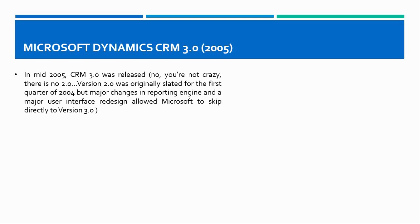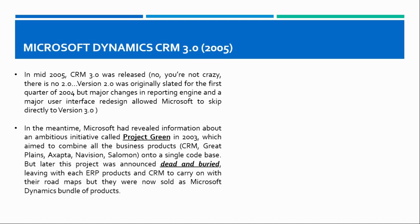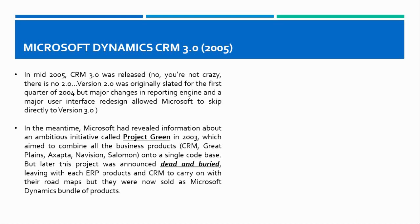In the meantime, Microsoft revealed information about an ambitious initiative called Project Green in 2003, which aimed to combine all business products — like CRM, Great Plains, Axapta, Navision, and Solomon — into a single code base. The end goal was to combine all five different applications into a single code base, but due to various reasons this project was later announced dead and buried, leaving each ERP product and CRM to carry on with their own roadmaps.